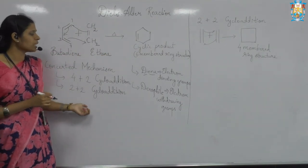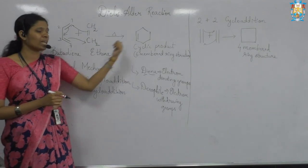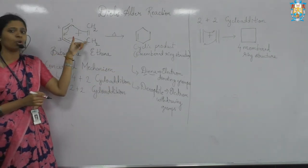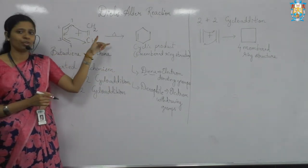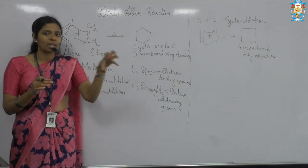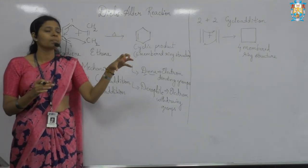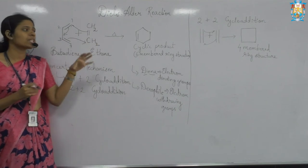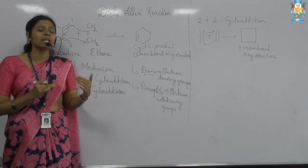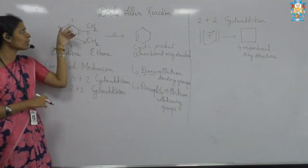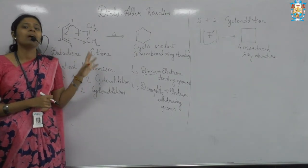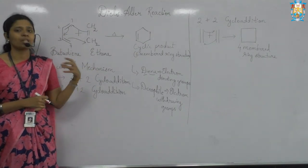This is a concerted mechanism because it is a single step. When you have electron-donating groups and electron-withdrawing groups, they react with each other in one single step giving the product. It is called a concerted mechanism because the reaction happens simultaneously — once the electron starts donating, this electron starts withdrawing, and hence the reaction proceeds.